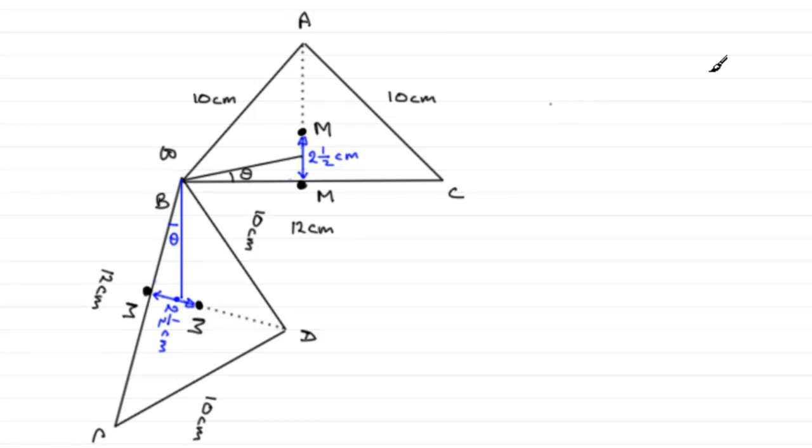It's going to look something like this. Maybe a bit bigger here than what it is over there, but this is our angle theta. This distance up here is going to be half of the two and a half, which is going to be 1.25 centimeters. And we know this distance from B to this mass M here is going to be half of the 12, six centimeters.